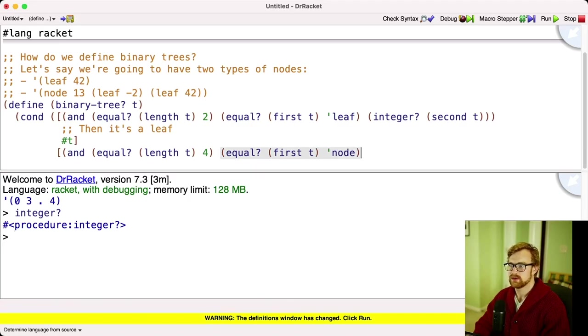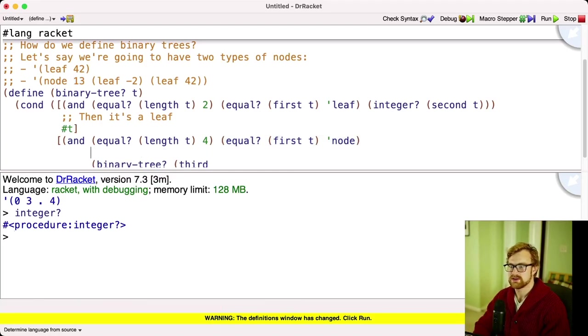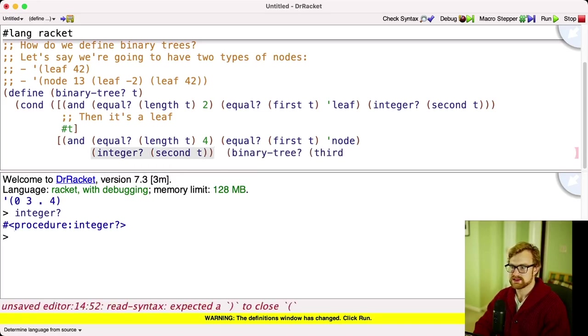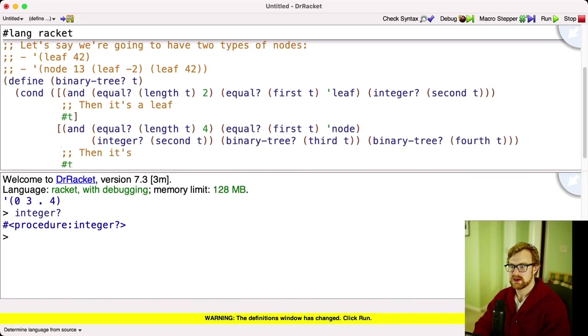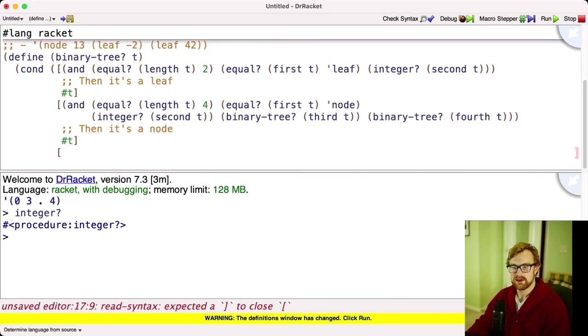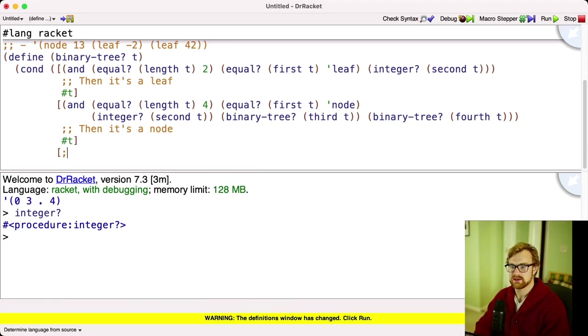And then the third one has to be a binary tree. So third of t needs to satisfy binary-tree? And then so does the fourth. Binary-tree? of fourth. And if that's the case, then it's a node. Now otherwise, if it's any other thing than one of these shapes, we're going to say it's not a tree or not a binary tree. So we're going to say else, false, not a binary tree.